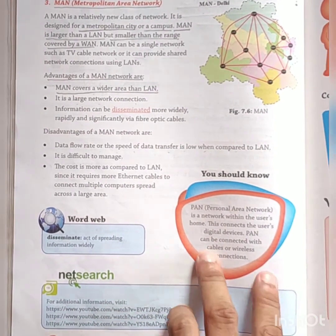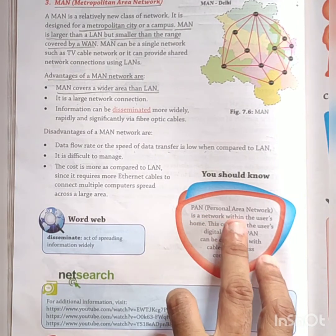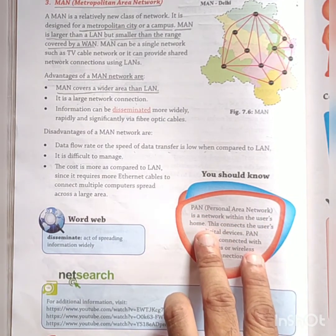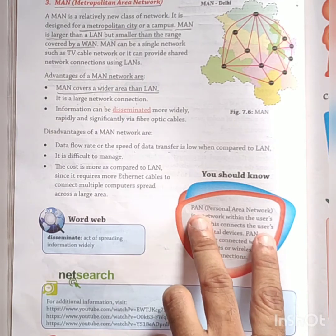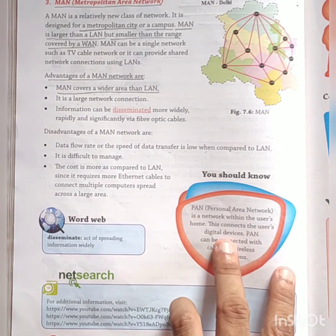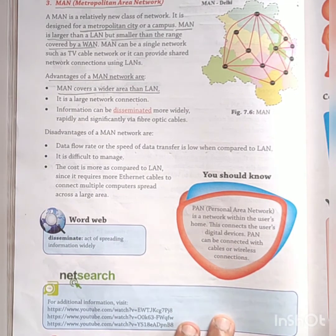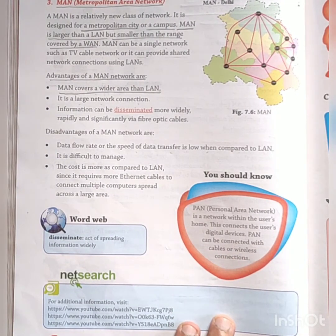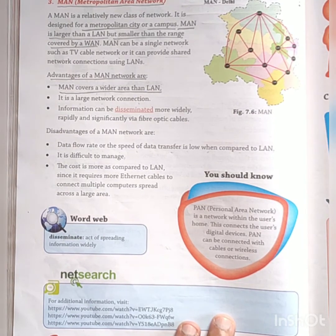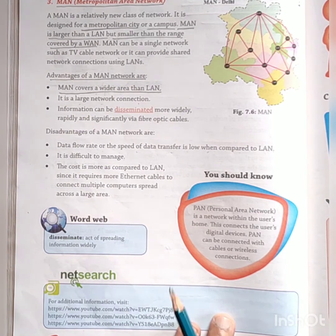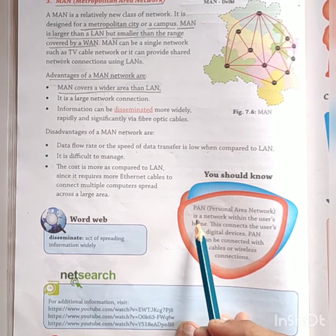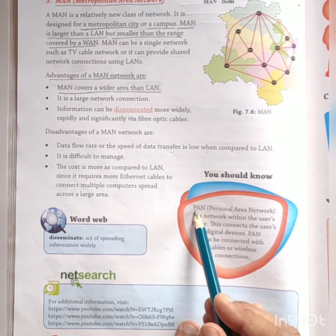We also have another type called PAN — Personal Area Network. It is a network within a user's home. It connects the user's digital devices. PAN can be connected via cables or wirelessly. Nowadays in our home we are using routers wirelessly. We are using smartphones, laptops, desktops, and tablets — setting up this particular network is called PAN.